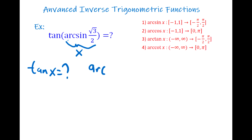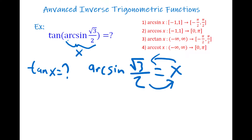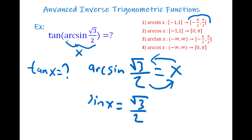We have arcsin(√3/2) = x. What we can do is switch those values: sine x = √3/2. We know that for arcsine the angle is between -π/2 and π/2, so it is equal to 60 degrees, because sine 60° = √3/2. And 60° is π/3.